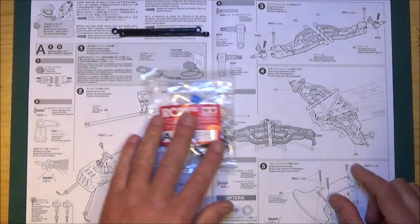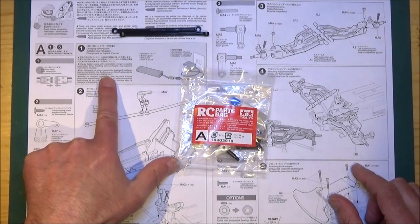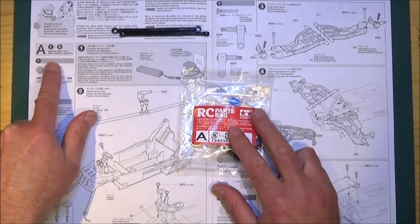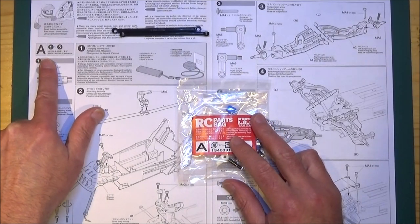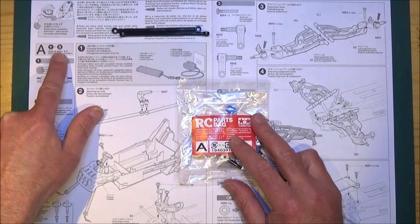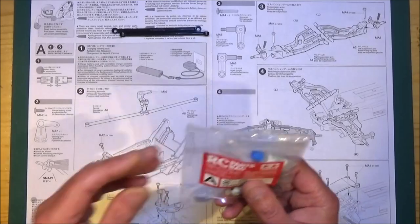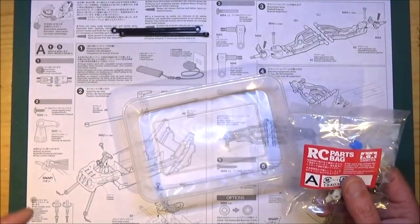First things first, we're going to start on step two because step one is just charging the battery. We need to open parts bag A, which will do steps one to five. I'm just going to get these parts out and put them in this pot.